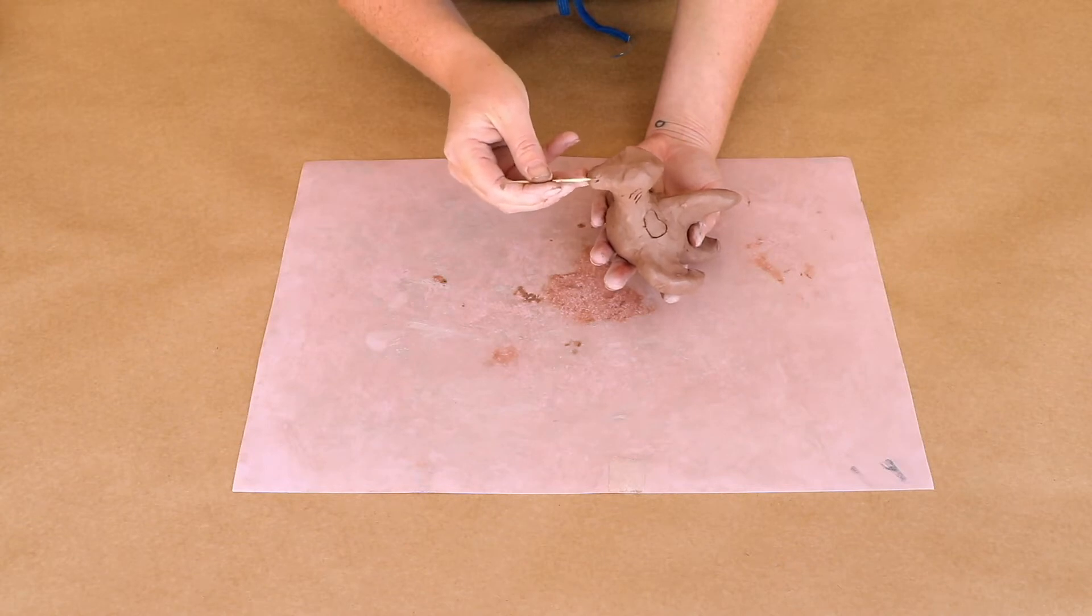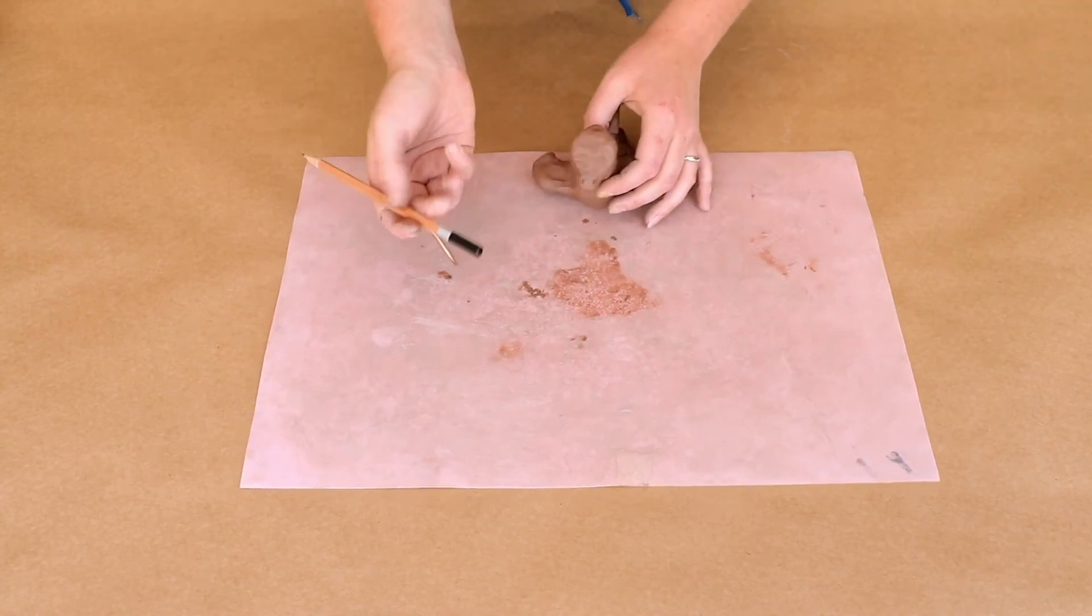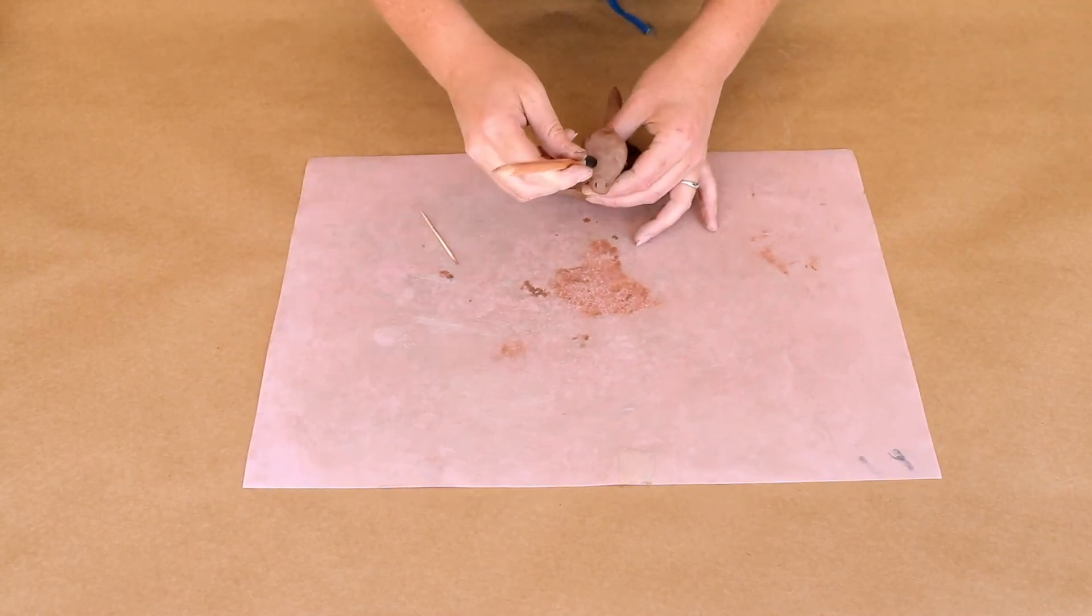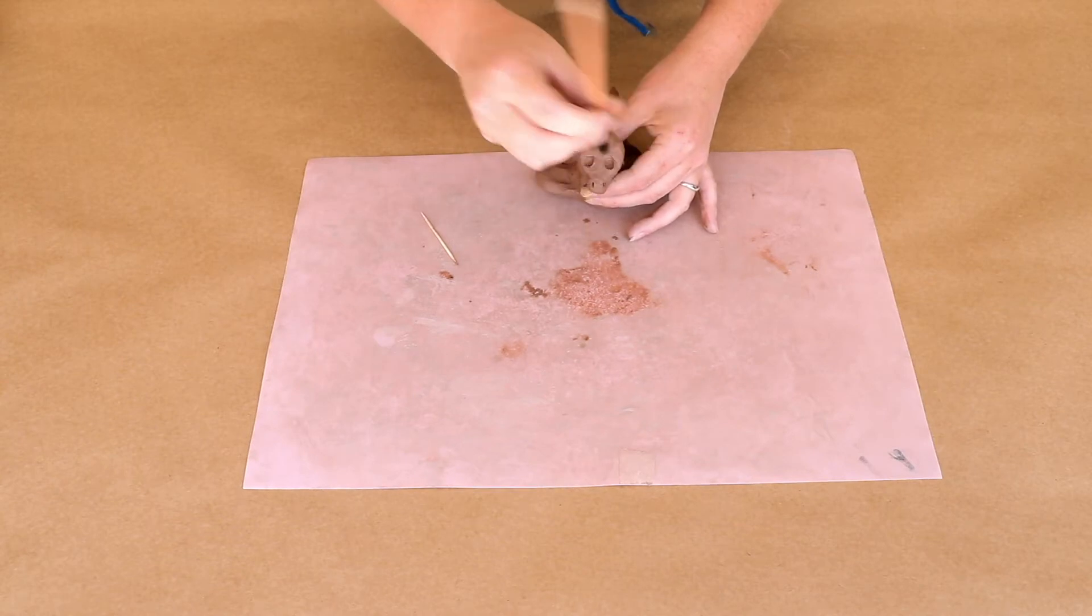Another great thing that you can use to make marks other than the toothpick would be a pencil. The bottom of the pencil is circular, create some eyes or spots. Be creative.